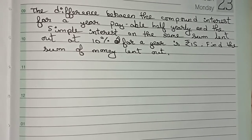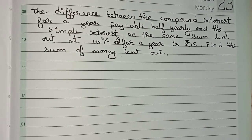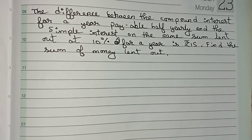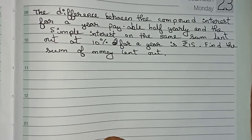Hello guys, welcome to this video. In this video, the question is: the difference between the compound interest for a year payable half yearly and the simple interest on the same sum lent out at 10 percent per annum for a year is rupees 15. Find the sum of money lent out.